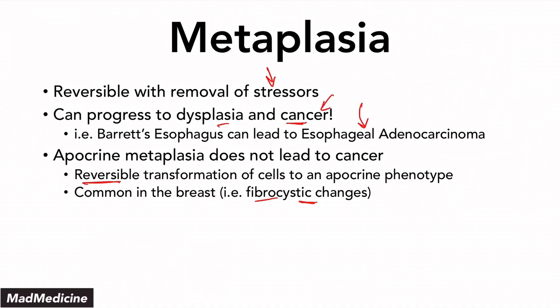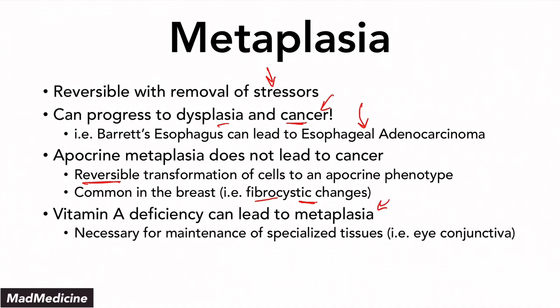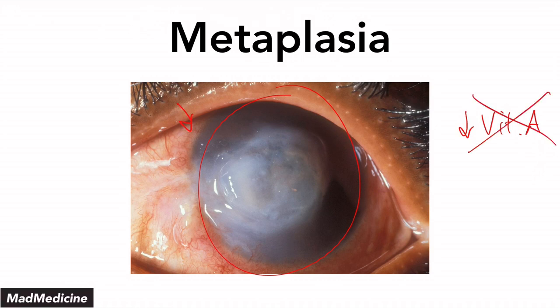There is a vitamin very important for metaplasia and cellular growth and adaptation: vitamin A. A deficiency in vitamin A can lead to metaplasia. Vitamin A is important for maintaining specialized tissues, especially the eye conjunctiva. Without vitamin A, it can lead to metaplasia and a condition called keratomalacia, in which the conjunctiva becomes cloudy and white — not normal for the eye conjunctiva.